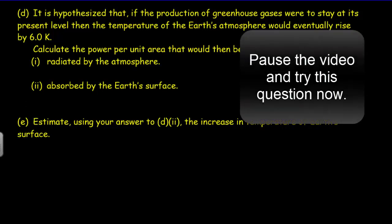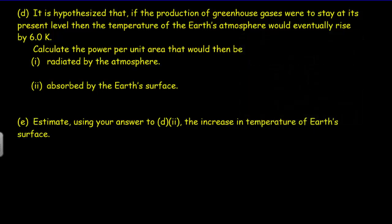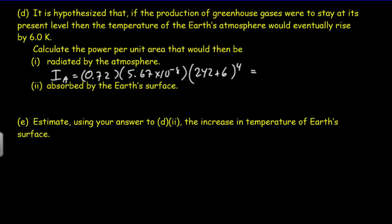If you didn't understand the assumptions of that simplest model, you're unlikely to get points for the rest of the question. The atmosphere is now at a higher temperature, so it's going to radiate a bit more energy. The new radiation of the atmosphere is given by emissivity × σ × T⁴: 0.72 × 5.67×10⁻⁸ × (242 + 6)⁴, which gives 154 watts per meter squared.